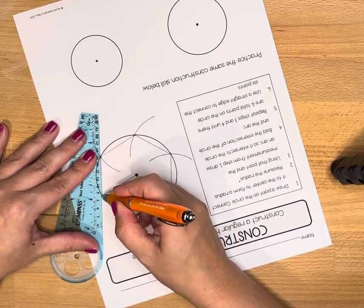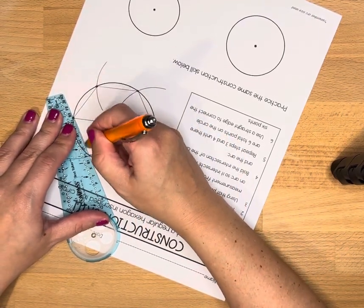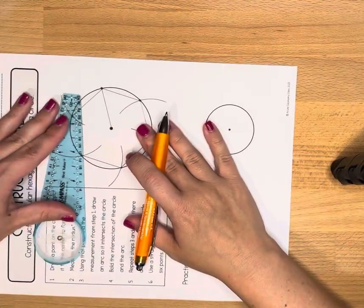An inscribed angle in a circle is an angle that's formed by chords and the vertex is on the edge of the circle.